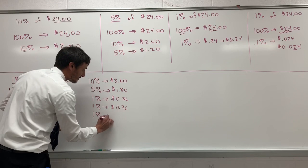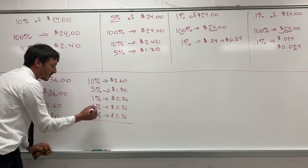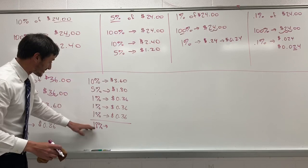And notice, if we add 10, 5, 1, 1, and 1, we get 18%. And that's the percentage is 18%. To find the value, the dollar value is to add the dollar amounts.